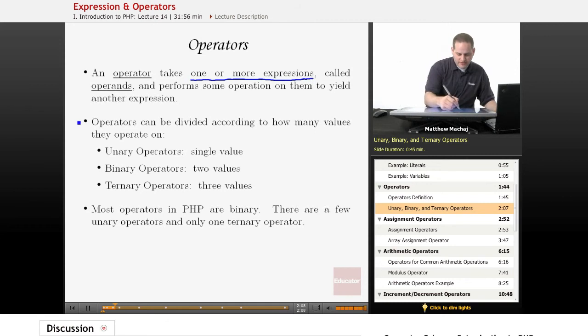Basically, the operators can be divided into categories based on the number of operands they work on. The ones that you're probably most familiar with would be something like an addition. You have five plus one. Basically, it's what's called a binary operator. It has two operands. It has the five and the one that it operates on to yield a value.